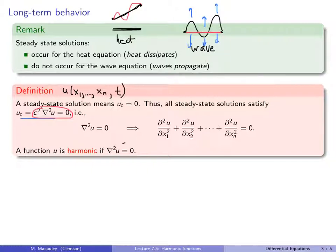A function is called harmonic if its Laplacian equals zero. It's such an important concept that we give it a name. Steady state solutions for ODEs were constant functions, because the time derivative being zero meant the function was constant. Steady state solutions of one-dimensional PDEs like the heat equation were linear functions — not necessarily constant, just not changing with time.